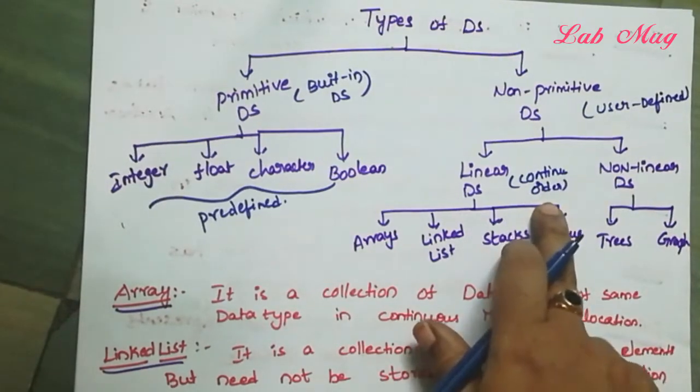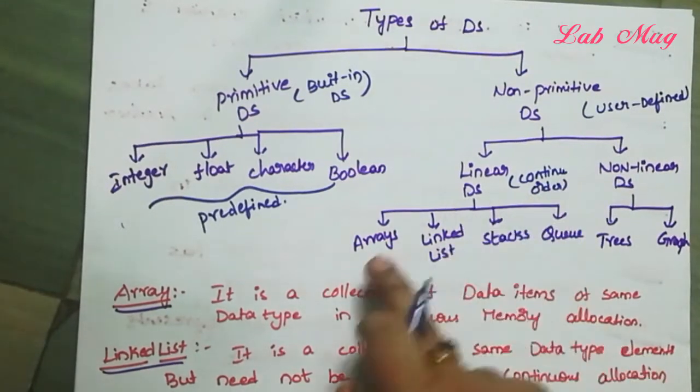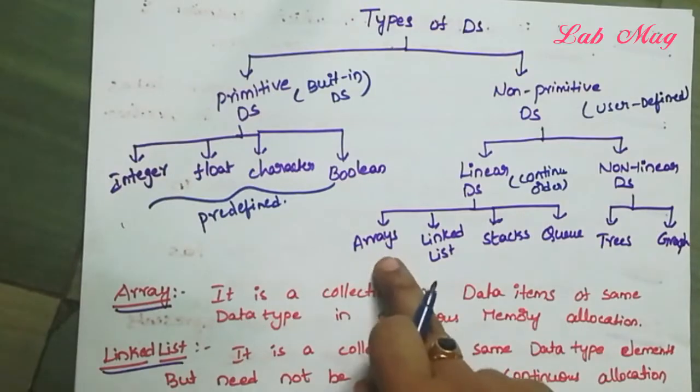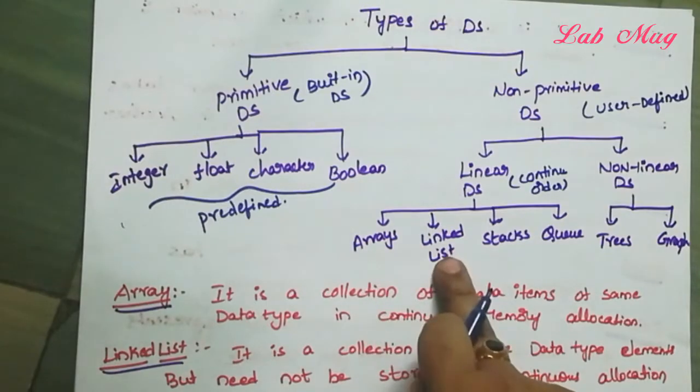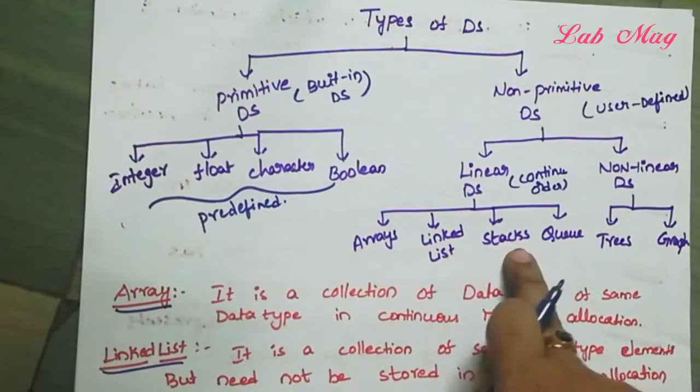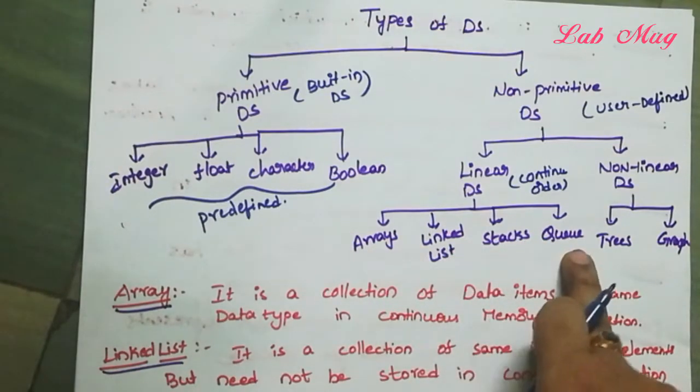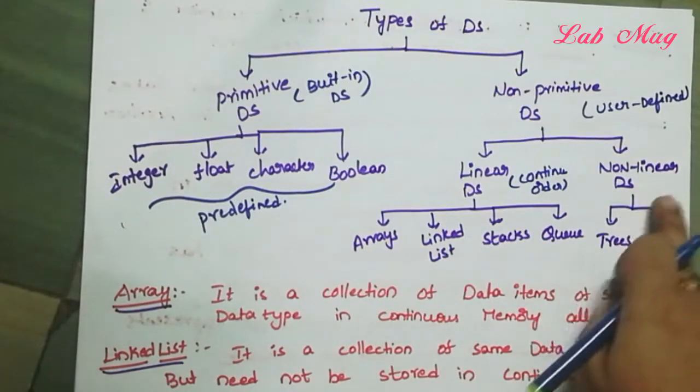Examples of linear data structures — where data is allocated in continuous memory — are: Arrays, Linked Lists, Stacks, and Queues. Examples of non-linear data structures — where data is not arranged in order — are Trees, Graphs, and Pointers.